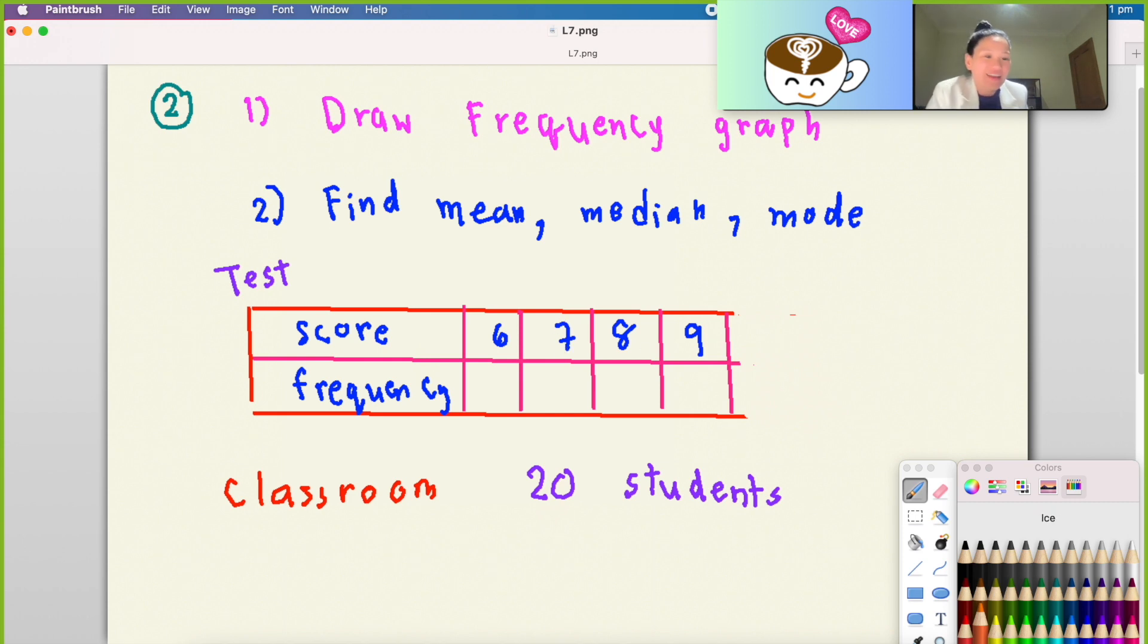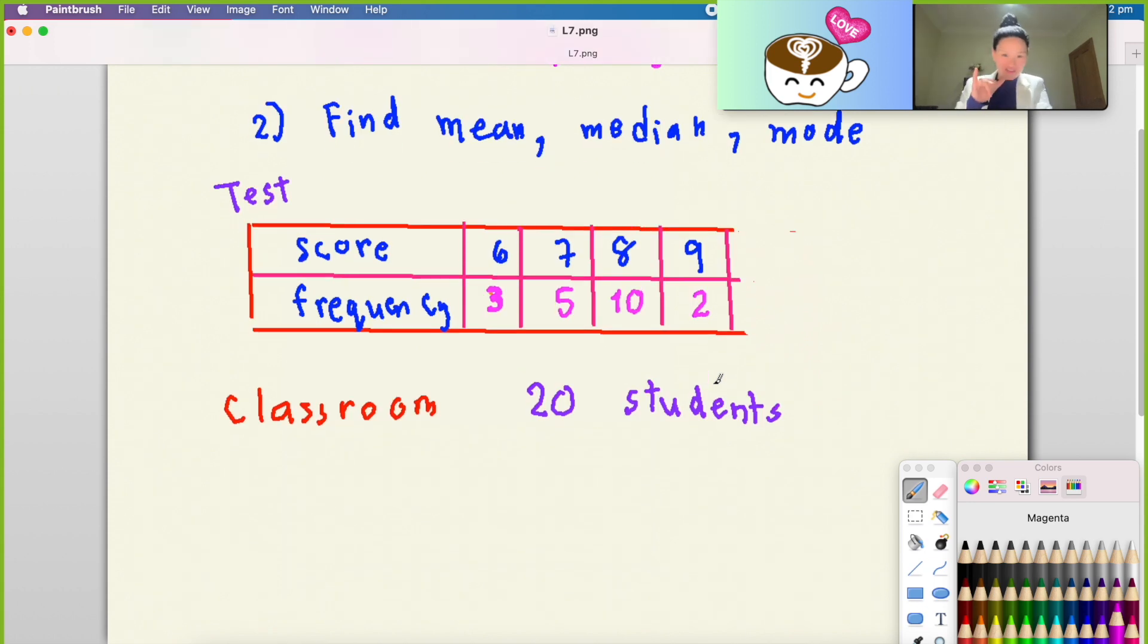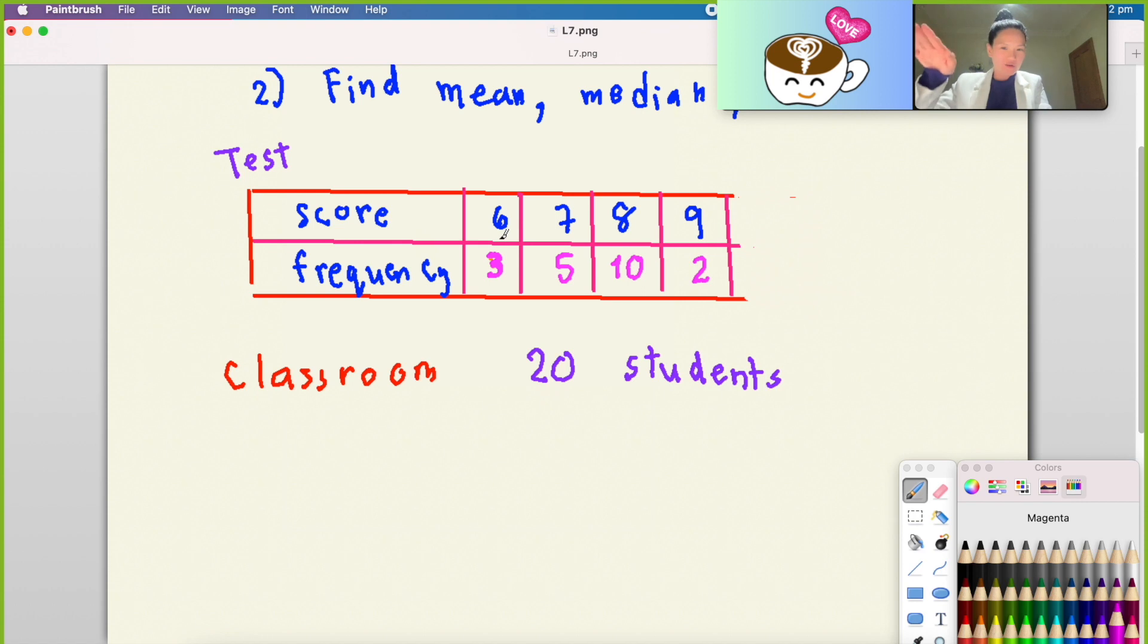Let's see: three students have score 6, five students have score 7, and 8 students have score 10. Wait, 10 students have score 8, and just 2 students have 9. If you don't believe me, let's count: we have 20 total. Three plus five plus 10 plus 2 equals 20 as well.